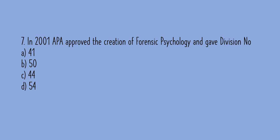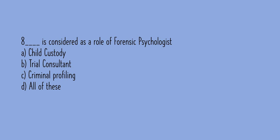MCQ 7: Which division number is associated with forensic psychology? Option A: 41, option B: 50, option C: 44, option D: 54. The correct answer is A, Division 41. MCQ 8: Which of the following is considered a role of a forensic psychologist? Option A: child custody, option B: trial consultant, option C: criminal profiling, option D: all of these. The correct answer is D, all of these.